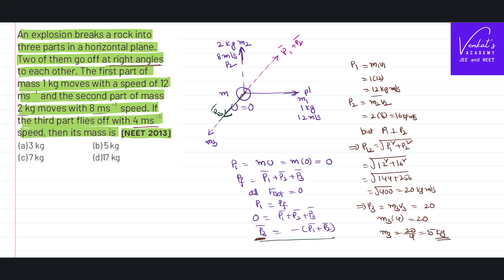We are not asked about the direction in this problem, but it is clear that since the resultant of p1 and p2 is in one direction, the third fragment will move in the same plane, opposite to that resultant. To solve this problem we used conservation of linear momentum: when there is no external force acting, the momentum of the system is always conserved. That's how we solve the problem.